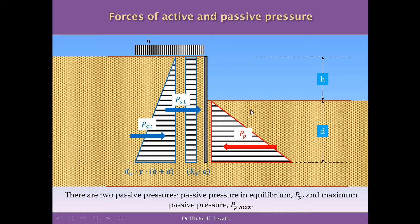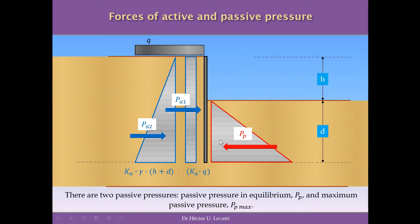In order to evaluate equilibrium, we work with forces rather than diagrams directly. We reduce the pressures — the triangular active pressure, the rectangular diagram for load Q, and the triangular passive pressure — to resultant forces applied at the centroid of each figure. PA2 is applied at the center of the active triangle, PA1 at the center of the rectangle, and PP at the center of the red triangle representing passive pressure.